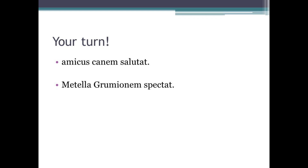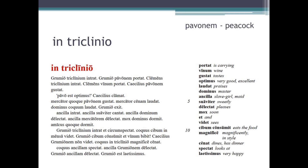Well done if you got both of those right. Now let's look at a passage from the Cambridge Latin course — In triclinio. Grumio triclinium intrat — Grumio enters the dining room. Grumio pavonem portat — Grumio carries the peacock. Clemens vinum portat — Clemens carries the wine. Caecilius pavonem gustat — Caecilius tastes the peacock. Pavo est optimus, Caecilius clamat — The peacock is excellent, shouts Caecilius.